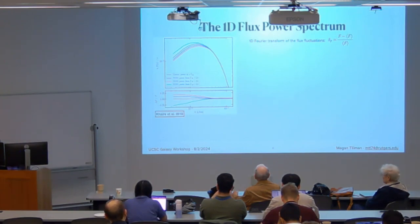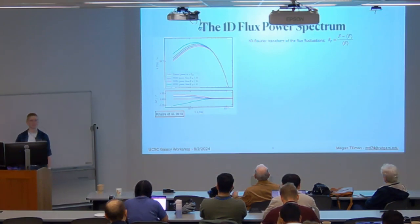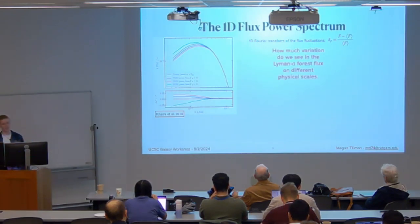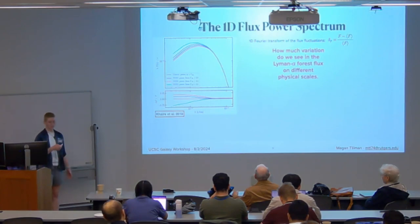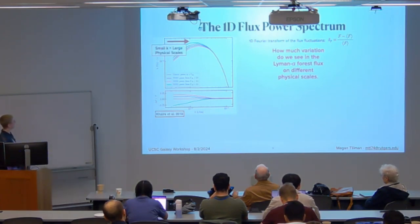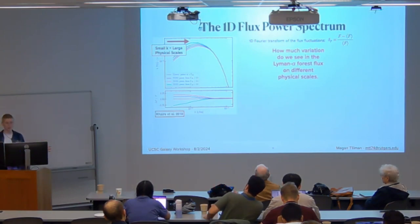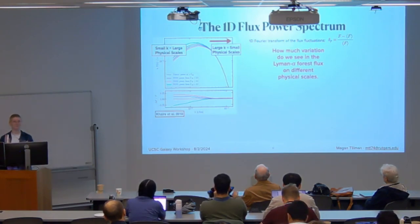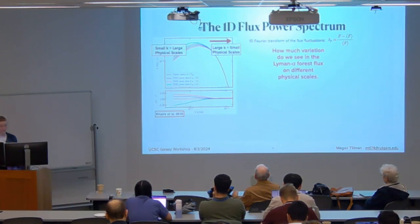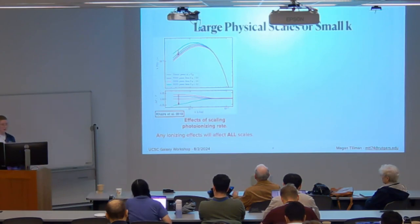I'm going to be specifically talking about the 1D flux power spectrum today — there are other statistics I've looked at in other papers. This is the 1D Fourier transform of the flux fluctuations in the Lyman alpha forest. In plain terms: how much variation do we see in the forest on different physical scales? Small k values are associated with large physical scales, and large k values are associated with small physical scales.